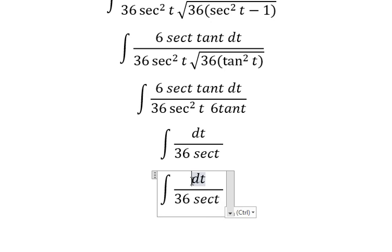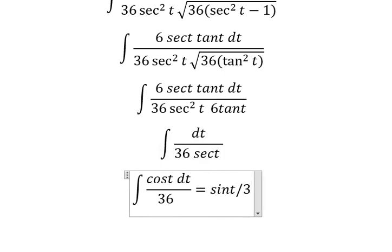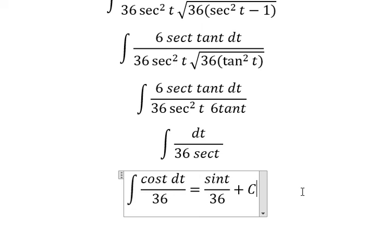And this one we got cos t in here, because one over secant t, you got cos t. The integration of cos t, we have sine t over 36, and we put constant c.